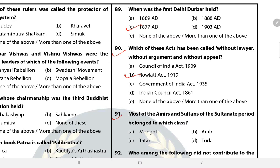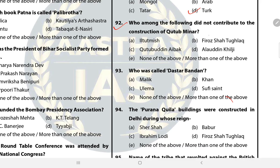Question 91: Most of the Amirs and Sultans of the Sultanate period belong to which class? The answer is D — Turk. Question 92: Who among the following did not contribute to the construction of Qutub Minar? The answer is Alauddin Khilji. The construction of Qutub Minar was started by Qutbuddin Aibak and completed during the reign of Sultan Iltutmish.